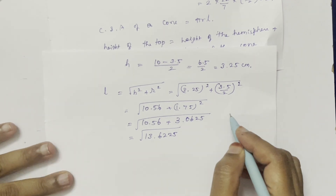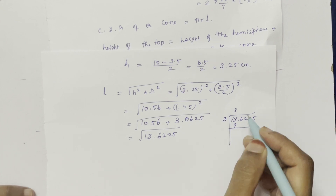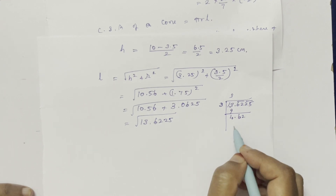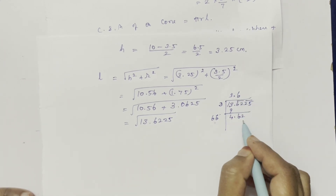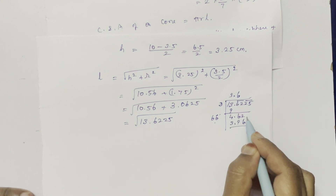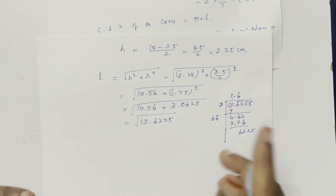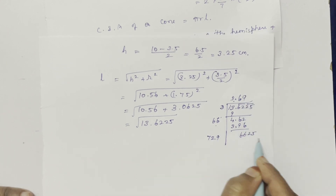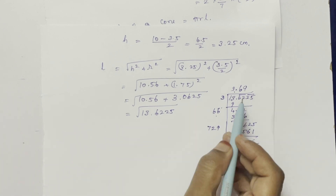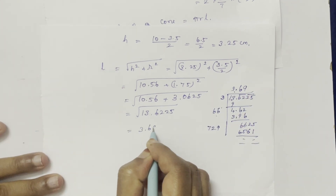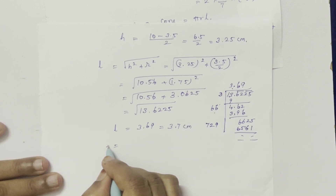Calculating the square root of 13.6225. Working through the square root calculation: √13.6225 ≈ 3.69, rounded to 3.7 cm. So slant length L equals 3.7 cm.